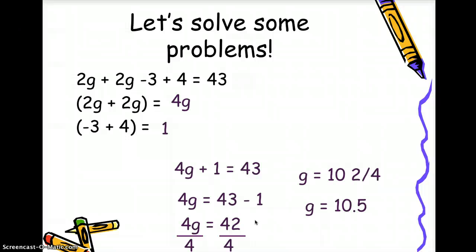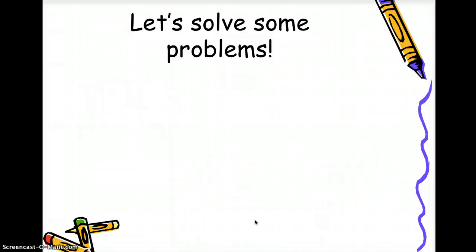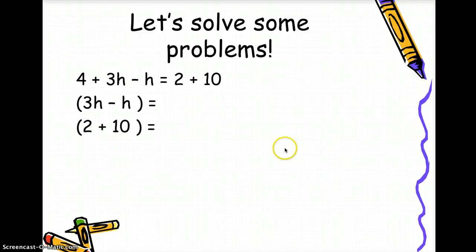Let's have the last example. Let's solve the problem or an equation by combining like terms. 4 plus 3h minus h equals 2 plus 10. The way you are going to combine like terms is up to you. You can develop your own strategy. 3h, I'm going to group 3h and minus h and 2 plus 10, which is at the other side of the equal sign.